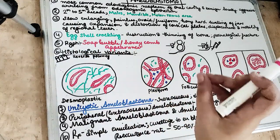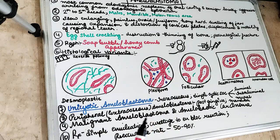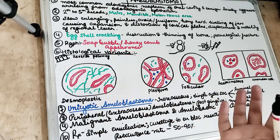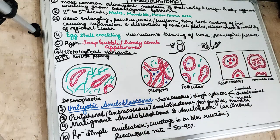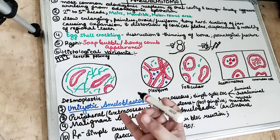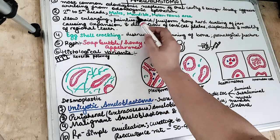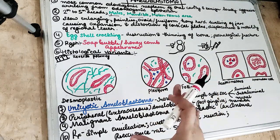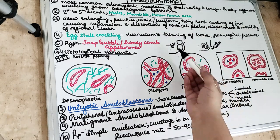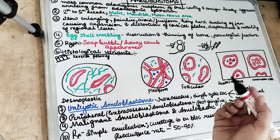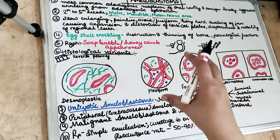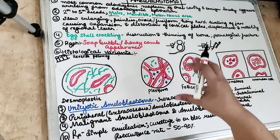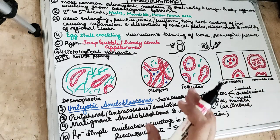Ameloblastoma is the most common odontogenic neoplasm of the oral cavity. It is a benign, locally aggressive lesion arising from odontogenic epithelium. It involves the second, third, fourth, and fifth decades of life. Males are most commonly affected, and it predominantly occurs in the mandibular molar and ramus region — three times more affected than the premolar or anterior region. Remember: M for mandible, M for molar, M for males.